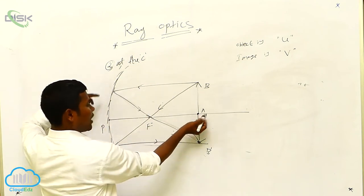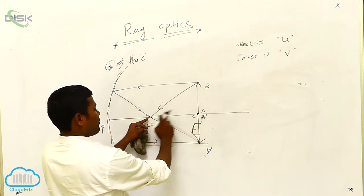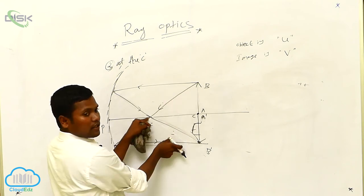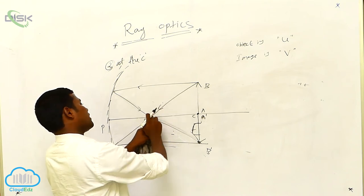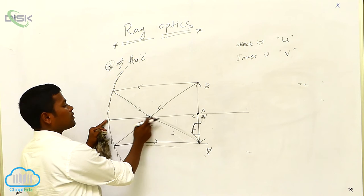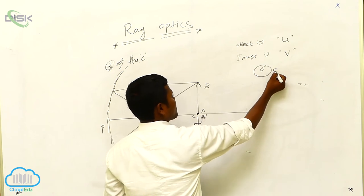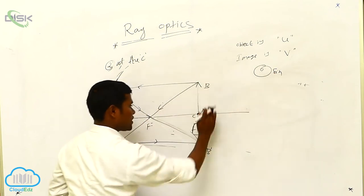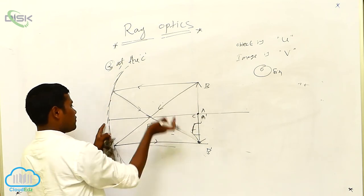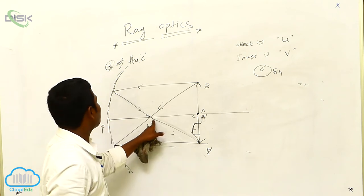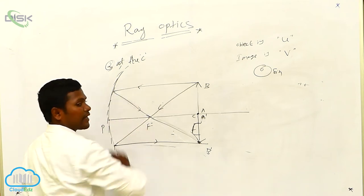You can draw the remaining cases yourself. I have drawn: first, at infinite; next, behind the C; next, one at the C; next, between F and C — you can keep your object there. Then the fourth case: you can keep your object at F. Next, you can keep between F and the pole. Then you will get a total of six cases. How many cases? Six cases. First: infinite. Next: behind C. Next: at C. Next: between F and C. Next: at F. Next: between F and the pole. These are the main ray diagrams for concave mirror.